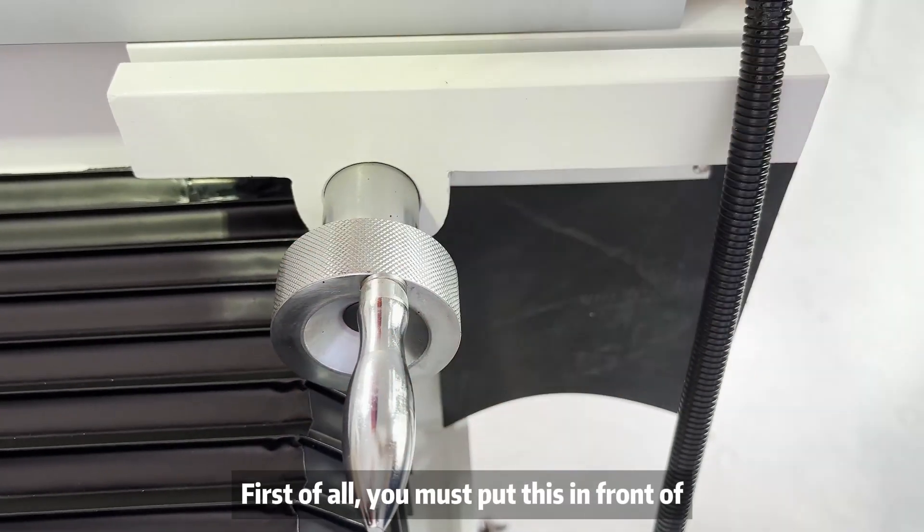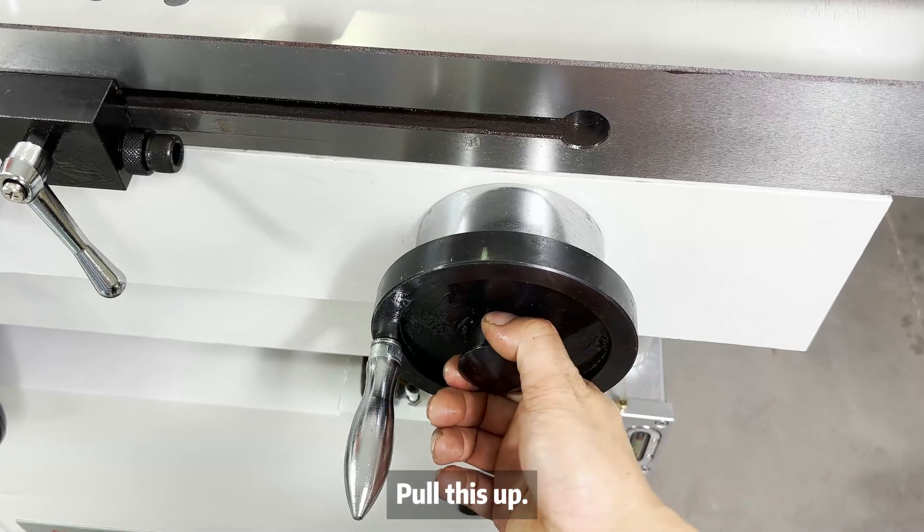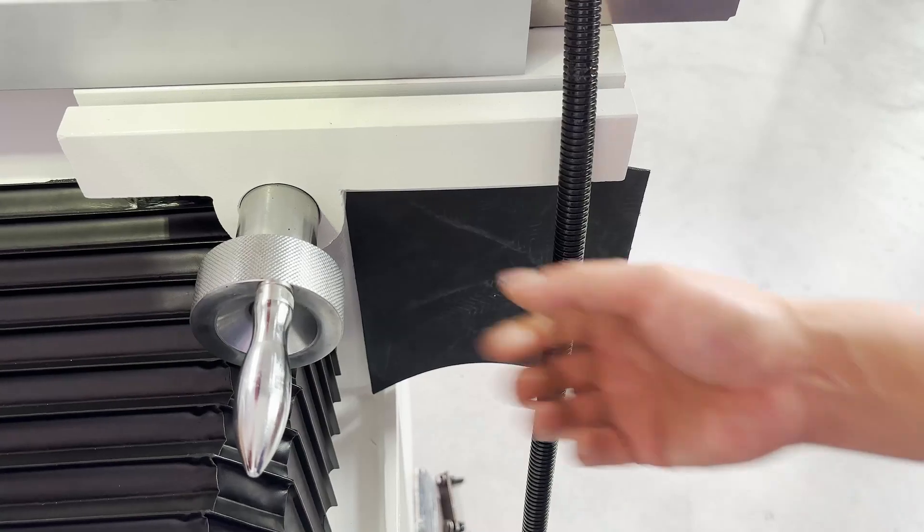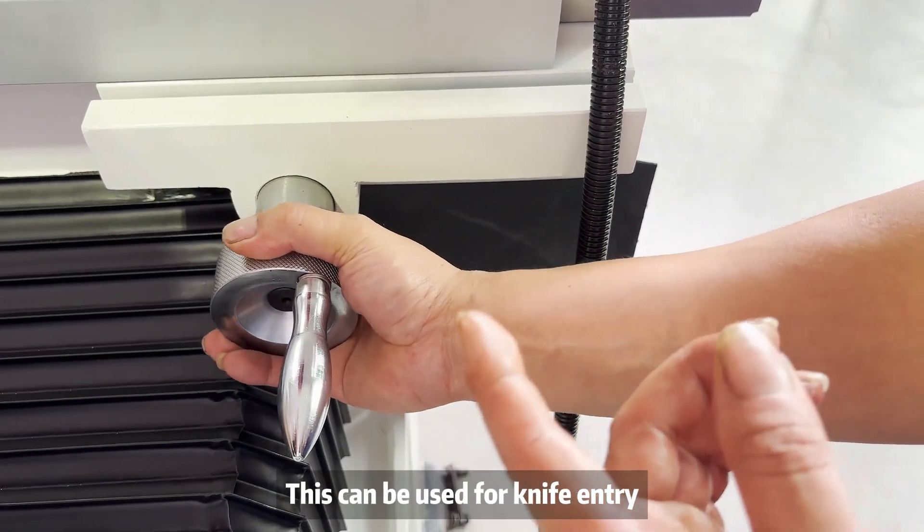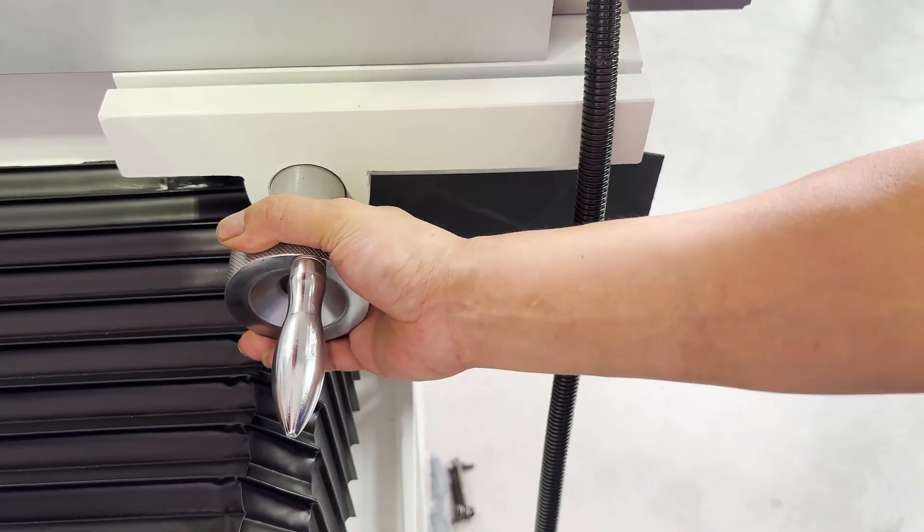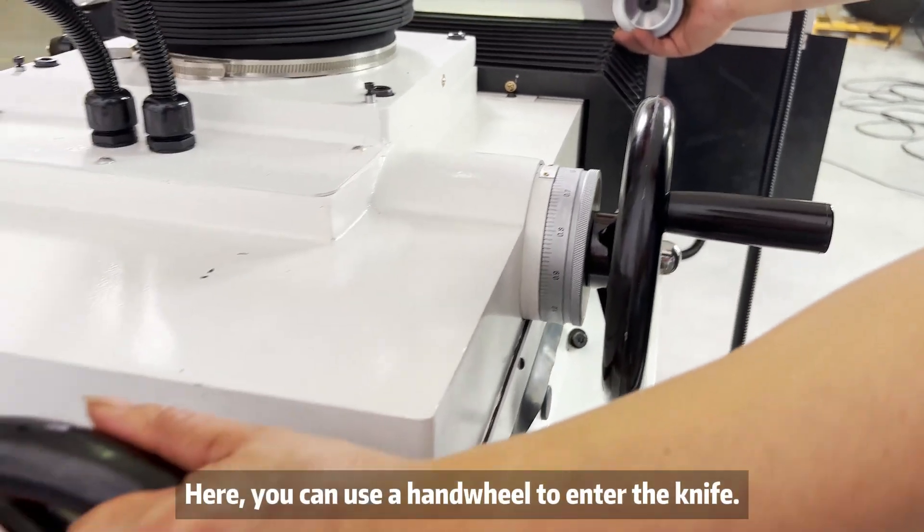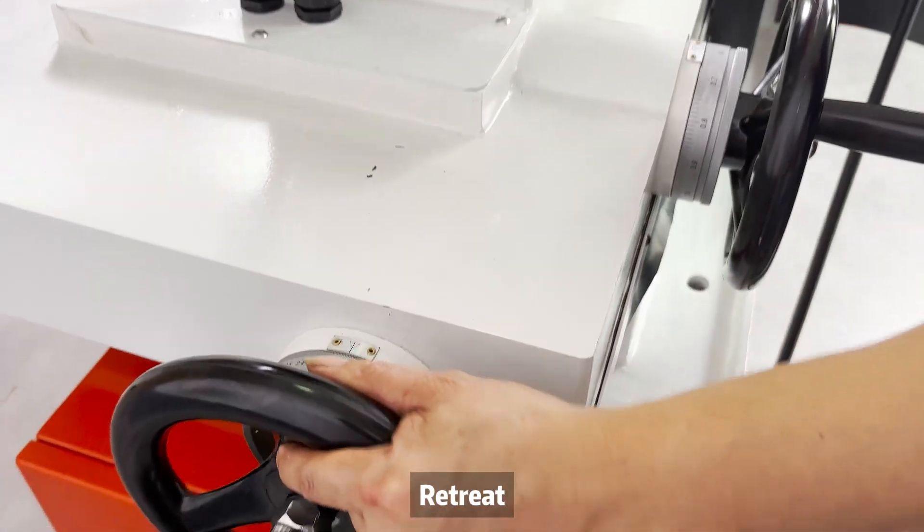First of all, you must put this. You can adjust it there with this hand wheel. This can be used for knife entry, grinding wheel feed. Here you can use a hand wheel to enter the knife.